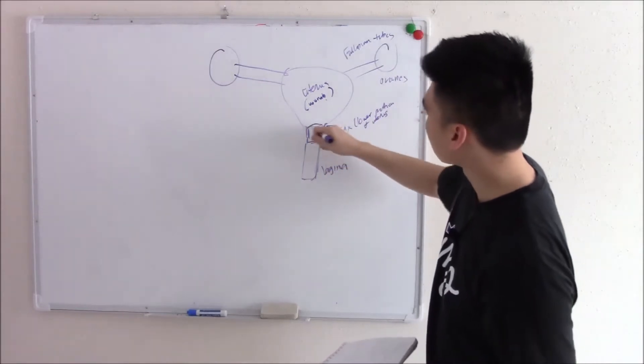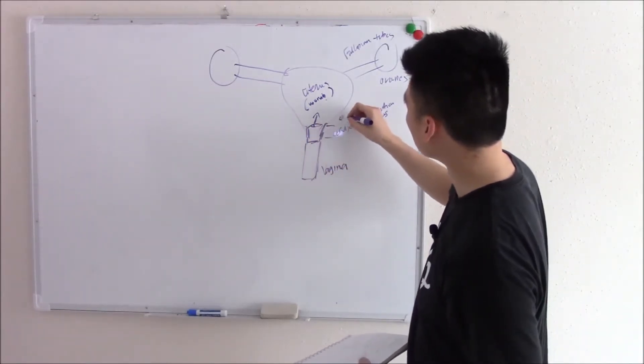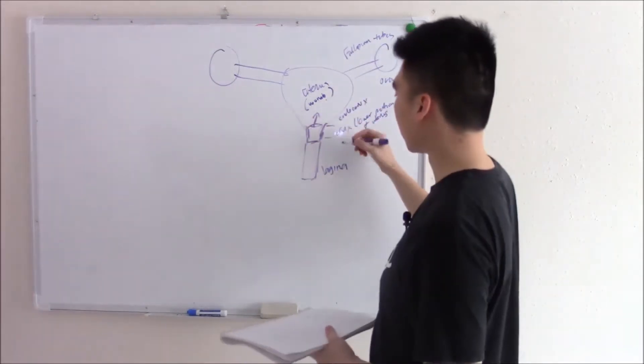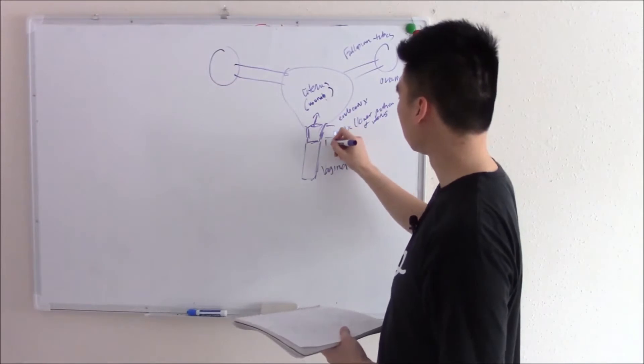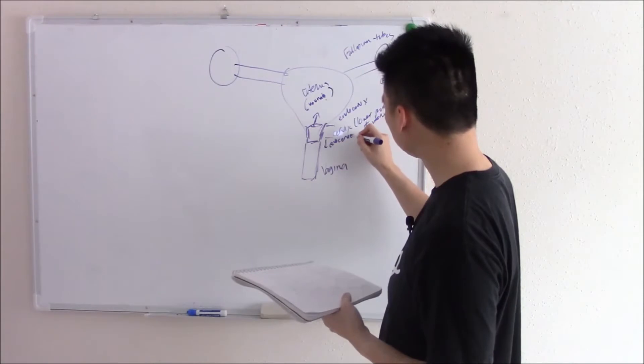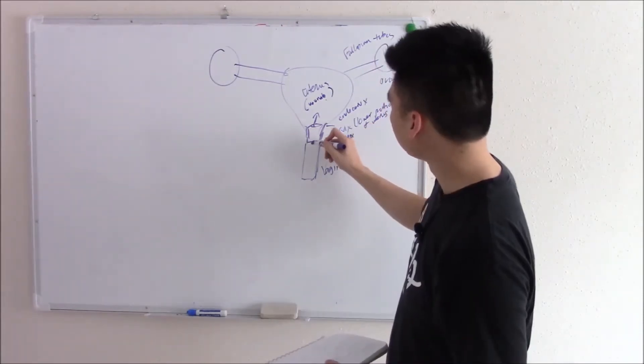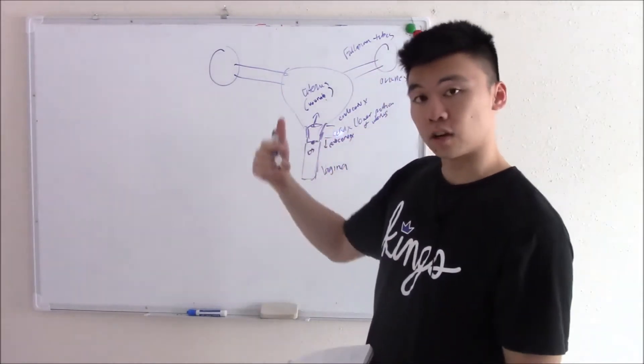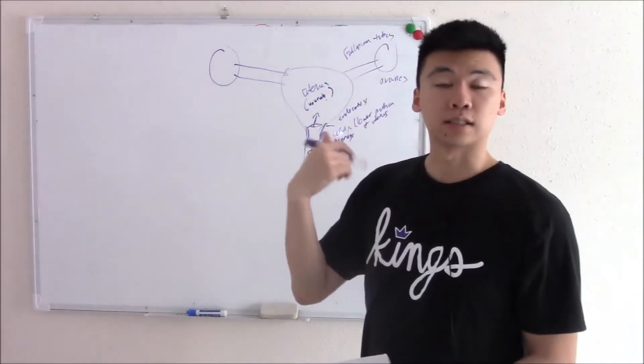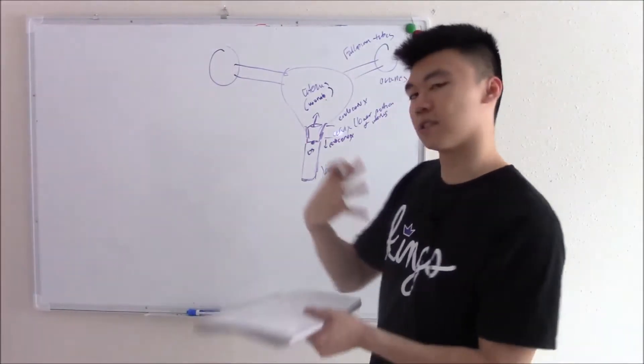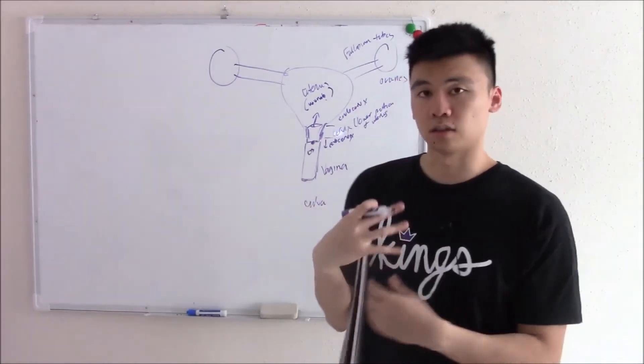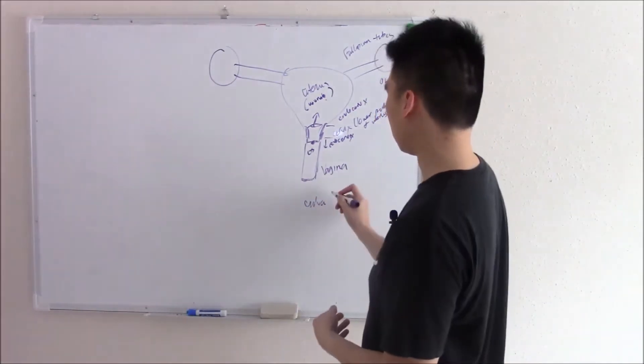The part of the cervix facing the uterus is called your endocervix. Part of the cervix facing the vagina or the outside is your ectocervix and there's a little hole called the os. That os allows inflow for things such as semen or outflow for things like menstruation. On the outside of the vaginal vault is just your outside skin.